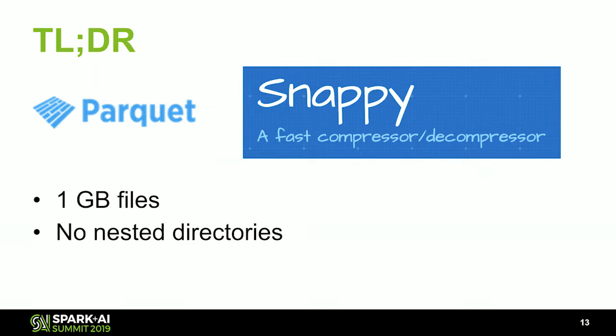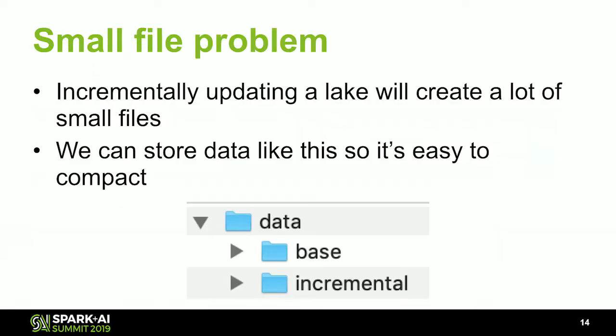The one-gigabyte files standard comes from Databricks — you don't want a ton of small files, and we'll talk about that in a little bit. The reason you don't want nested directories is because typically data is stored in a key-value store, not a Unix file system. Unix file systems are pretty good at globbing, but key-value stores aren't. S3 is a key-value store, so you don't want to do an expensive file listing operation every time you access your data lake. The best way to avoid that is to put all the files in a single folder, or generally two folders.